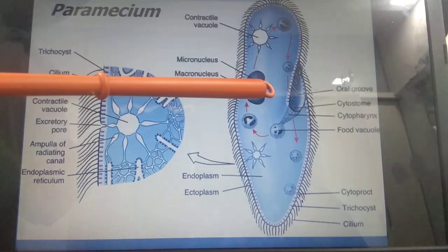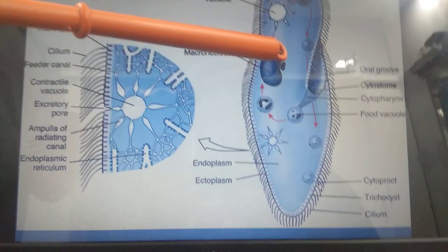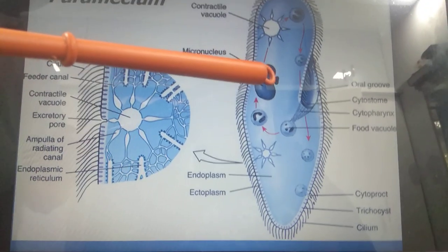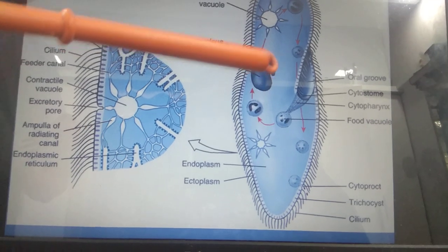The other small nucleus is called the micronucleus. This micronucleus performs the function of reproduction of the paramecium.